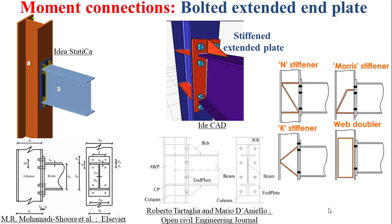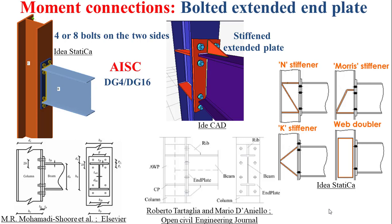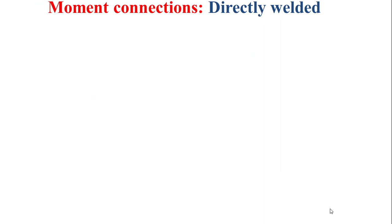Various types of stiffeners include the end stiffener, the mor stiffener, the case stiffener, and the web doubler, as depicted in the figure on the right. For the bolted extended end plate, the number of bolts can be four or eight on the two sides — in the presented example we have four bolts on each side. It is important to mention that the bolted extended end plate connections are pre-qualified moment connections specified in the American Institute of Steel Construction (AISC) standards, including the bolted extended end plate DG4 and DG16. DG4 is similar to DG16 except for some differences in plate thickness, seismic references, and experimental conditions.